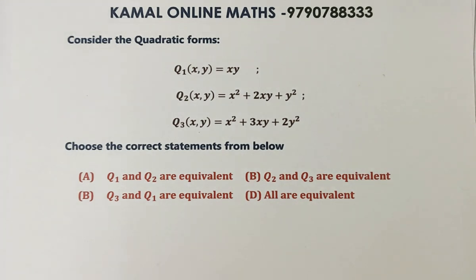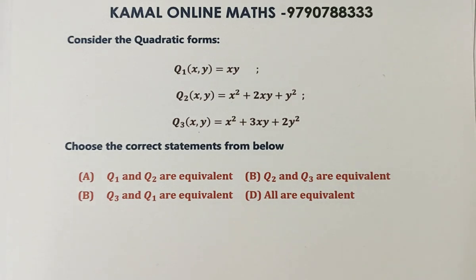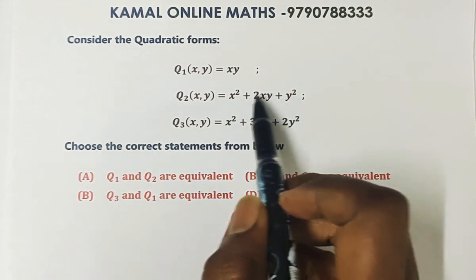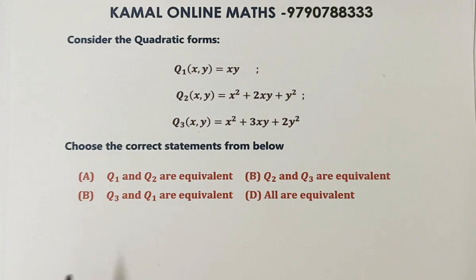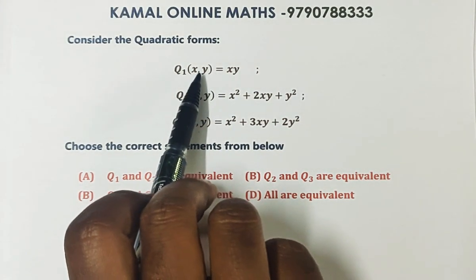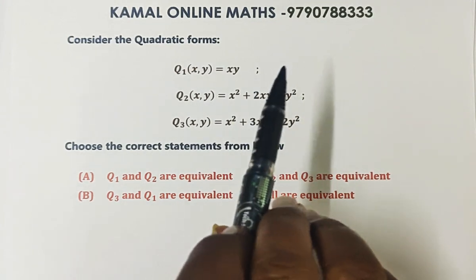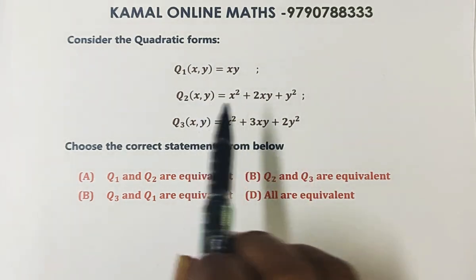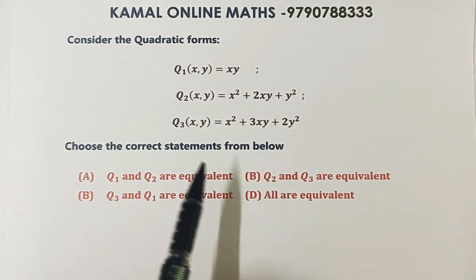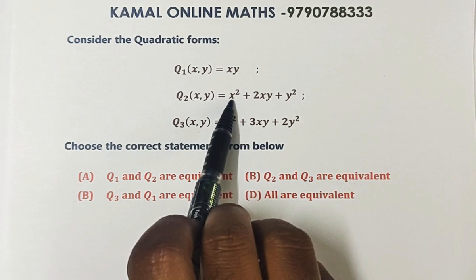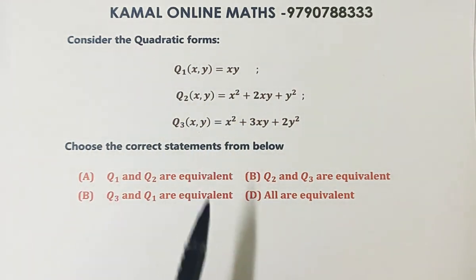In the quadratic forms, we represent them using matrices. The matrix formula is what we use. In the question, the two-degree terms with a single variable appear on the diagonal. If there are two variables, we write the matrix as a 2×2 matrix. For three variables in a quadratic form like x² + y² + z² + 4xy + 5yz + 7zx, we use a 3×3 matrix.